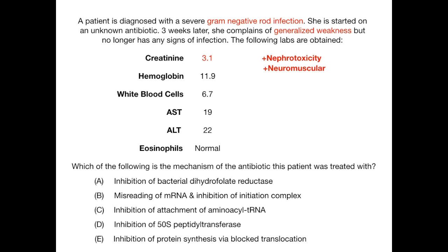The correct answer is choice B: misreading of mRNA and inhibition of the initiation complex. The patient was treated with an aminoglycoside. The mechanism of aminoglycosides involves misreading of mRNA and inhibition of the initiation complex, and classic adverse drug reactions for aminoglycosides include both nephrotoxicity and neuromuscular blockade.